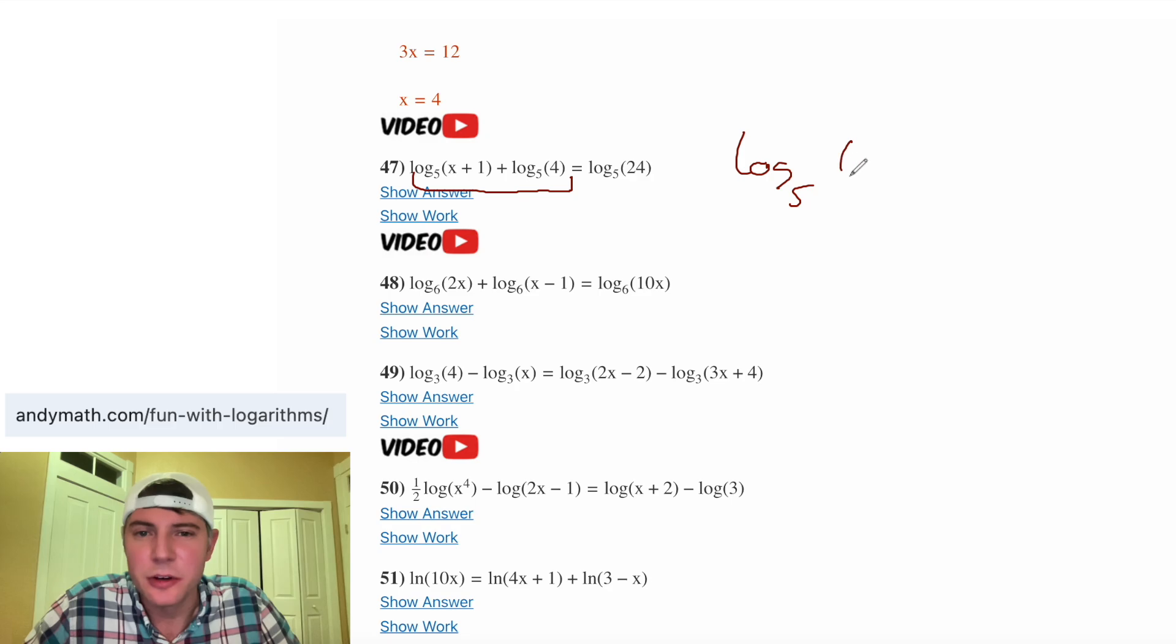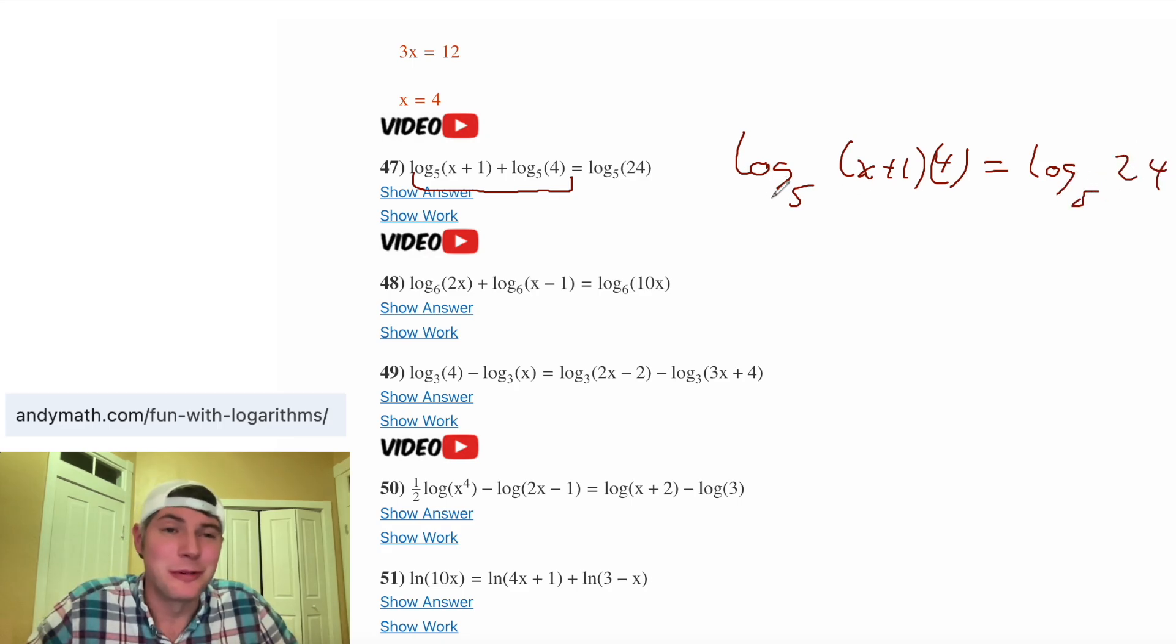And then since it's being added, those two things are being multiplied. So it'd be (x + 1) times 4. And that'll be equal to log base 5 of 24. Now we're back to the point where we have a single log on both sides with the same base. So from here, you can just drop the logs and set these equal to each other.